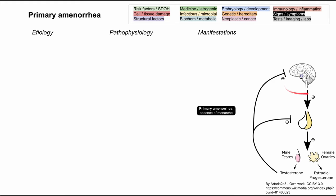Up in the brain, you have your hypothalamus — a part of the brain that secretes a hormone called GnRH. GnRH then goes to your pituitary gland, which triggers your pituitary gland to secrete two more hormones: LH and FSH.